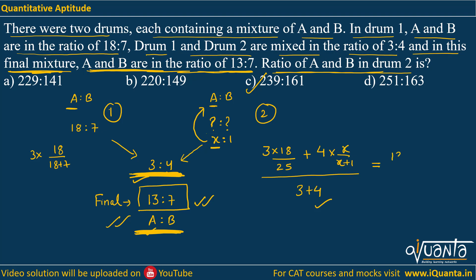This must equal 13/20, the proportion of A in the final mixture. Solving by cross multiplication gives x = 239/161. Since the assumed ratio was x:1, this means A and B in drum 2 are in ratio 239:161, so option C is again the correct answer. The first method involved playing with volumes using subtraction and addition. I hope everything is clear — if there is a doubt, please comment. Thank you.